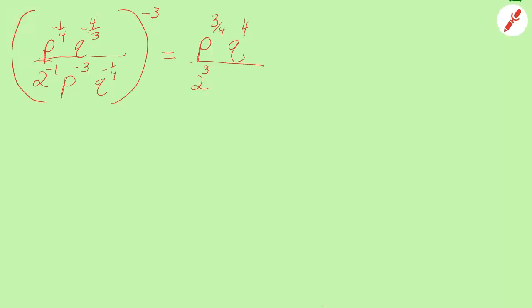Negative 3 times negative 3 is positive 9, so in the denominator I'll have p to the positive 9. And negative 1/4 times negative 3 is positive 3/4, so I'll have q to the positive 3/4. Now let me read the entire fraction: in the numerator I have p to the 3/4 power, q to the 4th power; in the denominator I have 2 to the 3rd power, p to the 9th power, q to the 3/4 power.